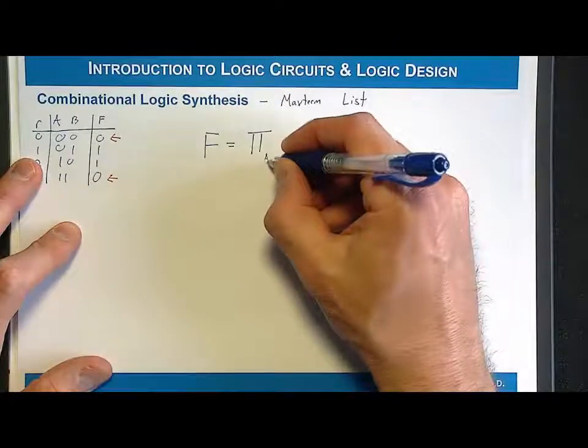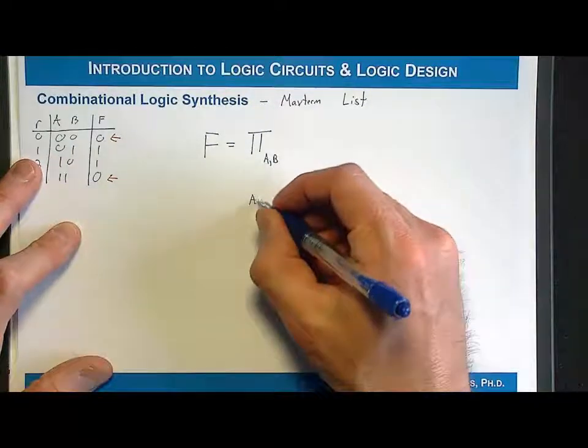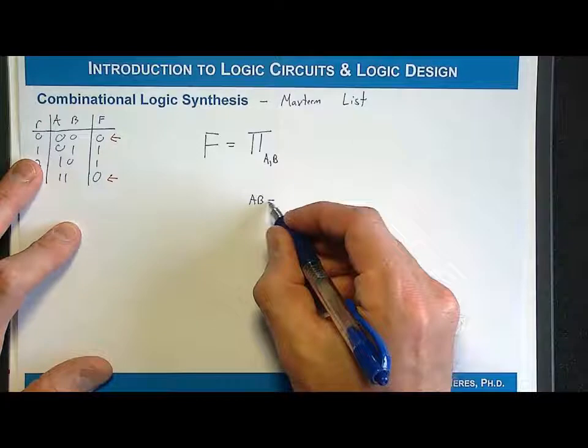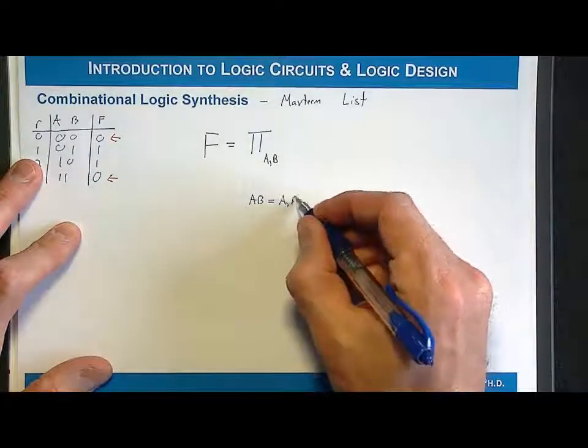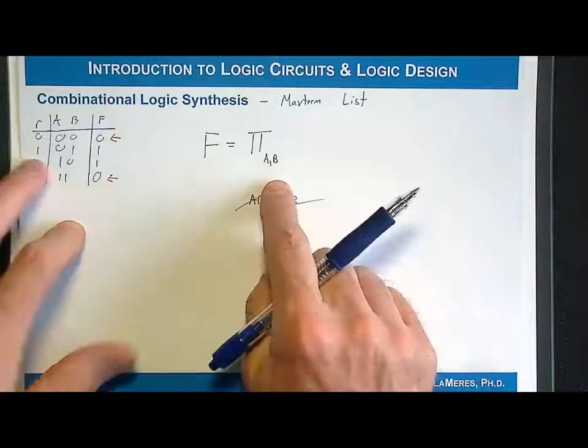And then again, we have to put our input variables as subscripts, making sure to comma delimit them, because remember AB is a perfectly valid signal name, so AB is not the same as A comma B. So we always want to have a comma delimited.